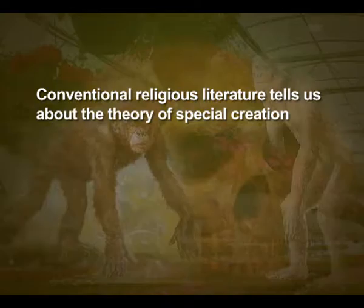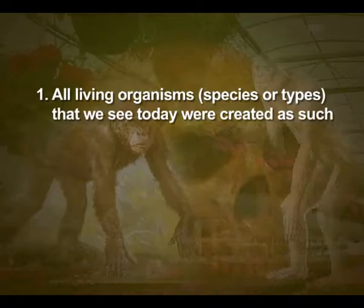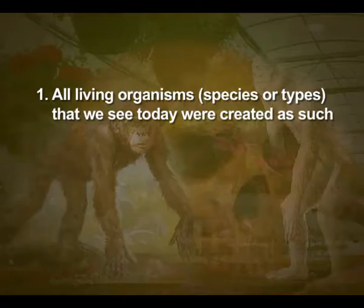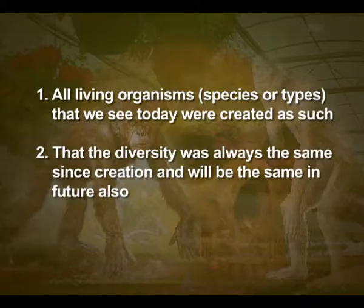Conventional religious literature tells us about the theory of special creation. This theory has three connotations: one, that all living organisms — the species or types we see today — were created as such; second, that the diversity was always the same since creation and will remain the same in future; and third, that the earth is about 4000 years old.